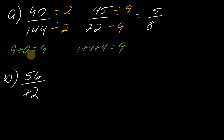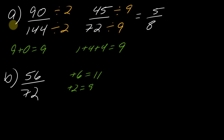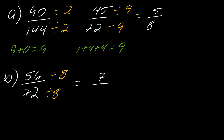For the next example, using 5+6=11 (not divisible by nine) and 7+2=9 (divisible by nine), showing how the digit-sum trick applies. Moving to problem B: the top and bottom are divisible by eight, and the final answer should be seven over nine. If you took a couple of steps to get there, that's not a problem.